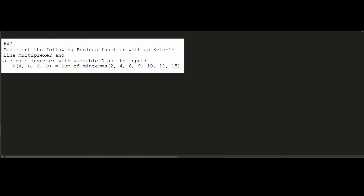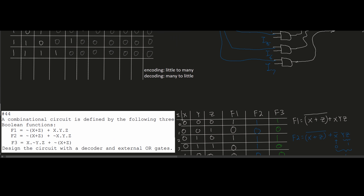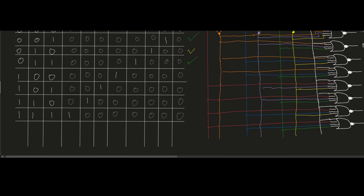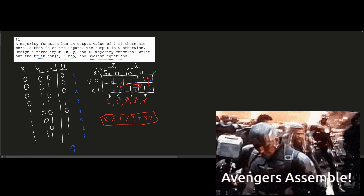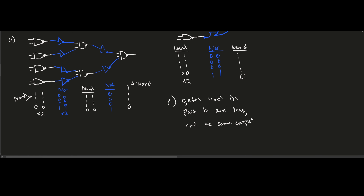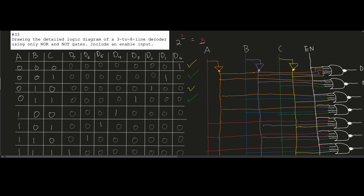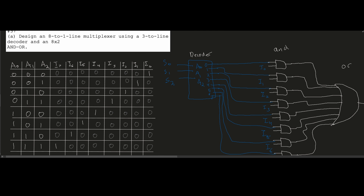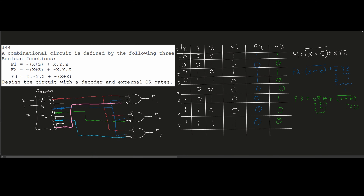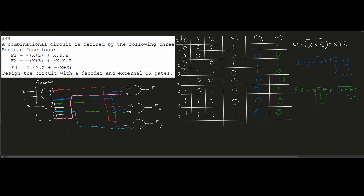Remember that a minterm basically means a one value. We've done all of these previous problems — with the decoder and the detailed logic diagram, with the multiplexer and a 3-to-2 line decoder in an 8x2 — and we're going to use the decoder we've practiced multiple times to solve this with our truth table.